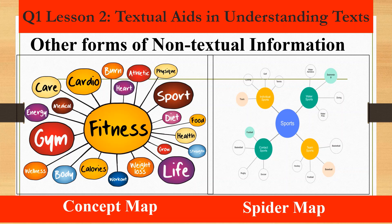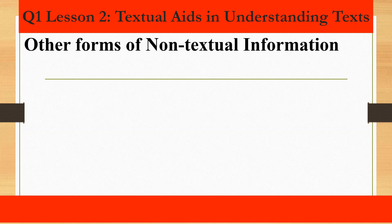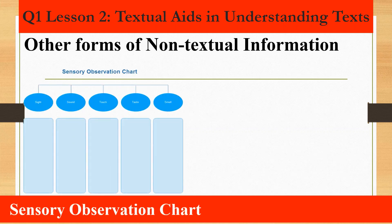Next, the spider map. A spider map or semantic map is a visual tool to organize data in a logical way. A main concept is written at the center and lines are used to link ideas. Another is the sensory observation chart. It is a kind of chart used to record sight, sound, touch, taste, and smell of some objects or process.